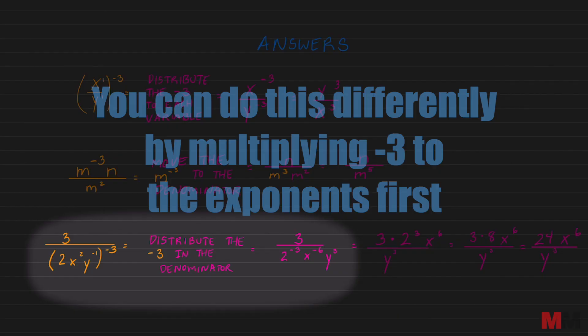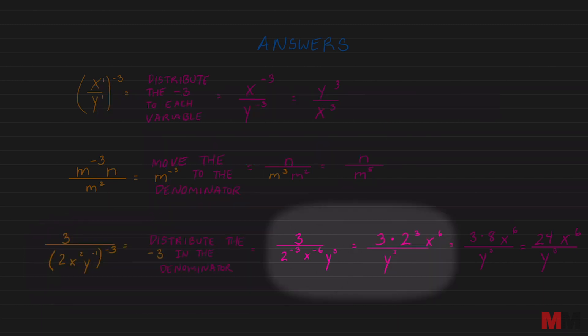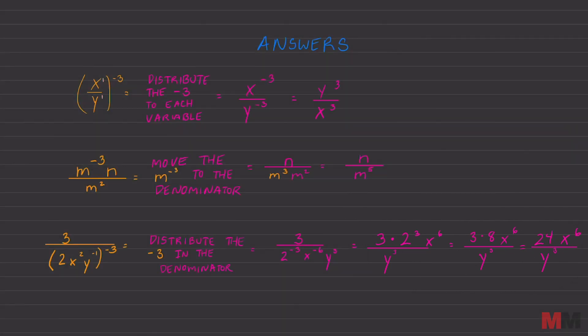For the last question, you can do this in a different way. I wanted to show you a different way. Instead of moving the whole bracket to the top, you can even distribute the negative 3 first, just like that. And once you have it like that, move the ones with negative exponents, switch its positions, and just keep simplifying as you go. All these rules of exponents are confusing and I have a lot of videos on it to help you guys out. Check those out, throw me a like and subscribe if I helped you, and I will see you on the next episode. Peace!